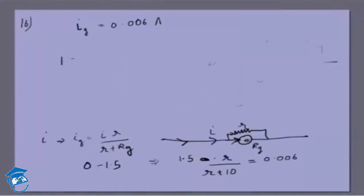So the equation is 1.5 or 3/2 times r by r plus 10 is equal to 0.006, which means 3r is equal to 2 times r plus 20 times 0.006.